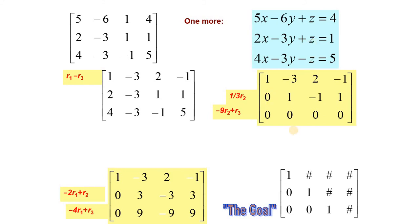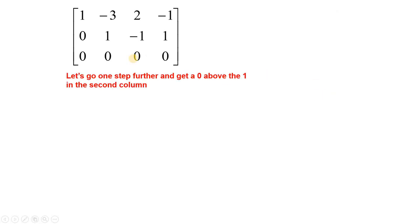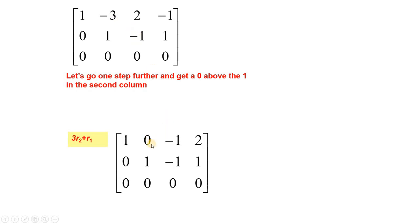Both entries are 0, where the rank is 2, which is less than 3. Hence the 2 variables x and y can be written in terms of z. In this situation, the system is consistent and we have infinite solutions. Since 0z is equal to 0, that is 0 is equal to 0, this is a true statement. Now using R1 plus 3 times R2, this minus 3 becomes 0.